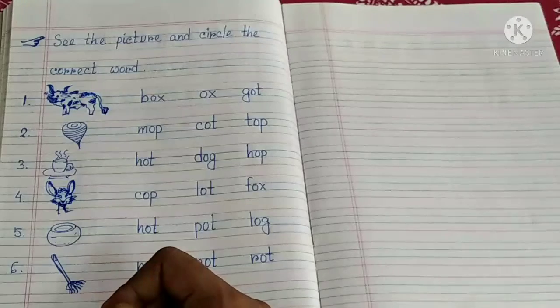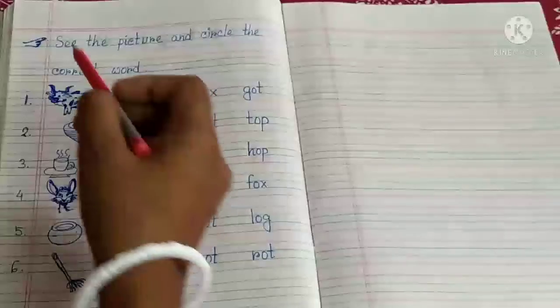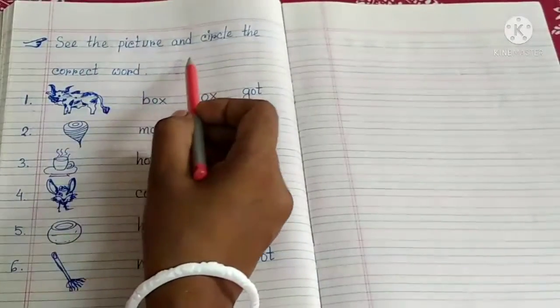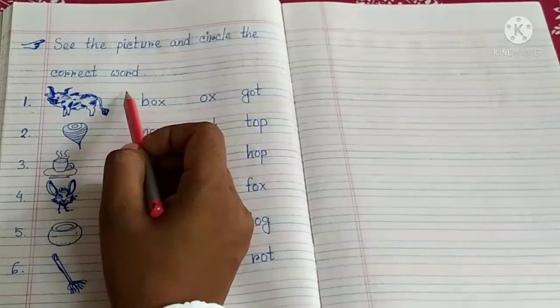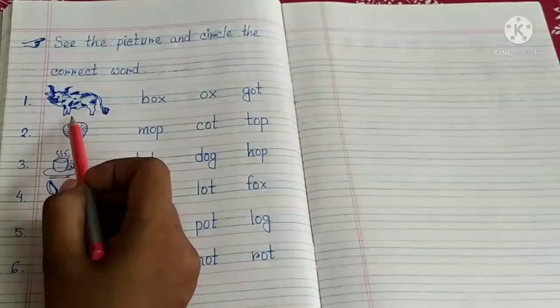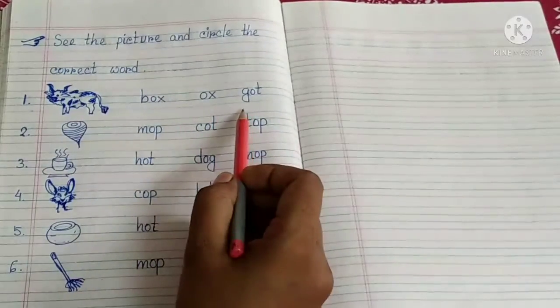So children, look at here. See the picture and circle the correct word. First, you have to identify the picture, and you will circle the correct word from here.